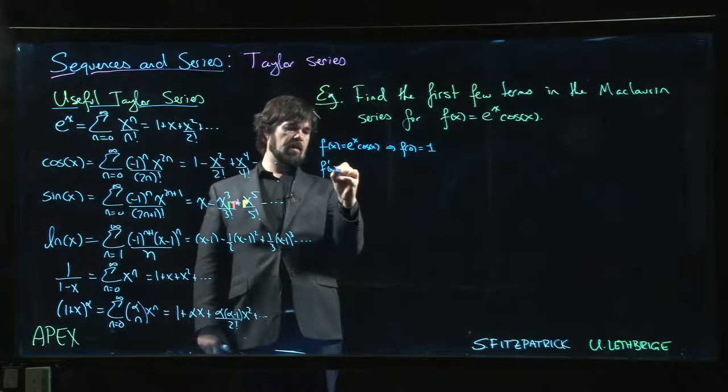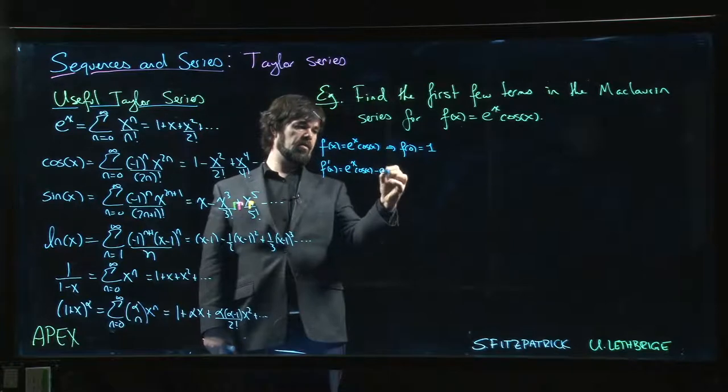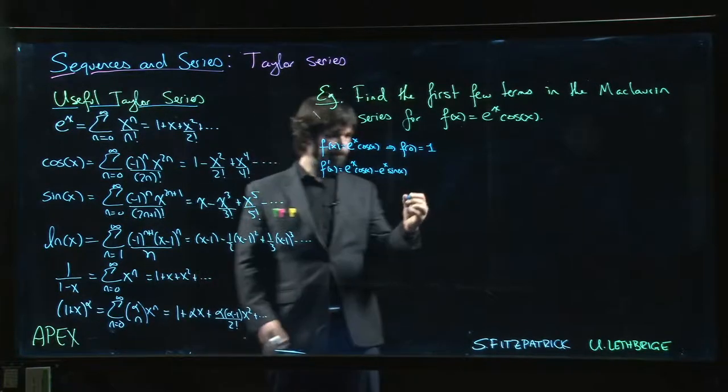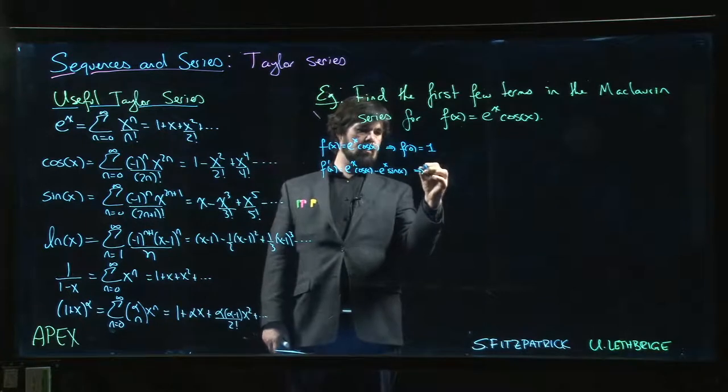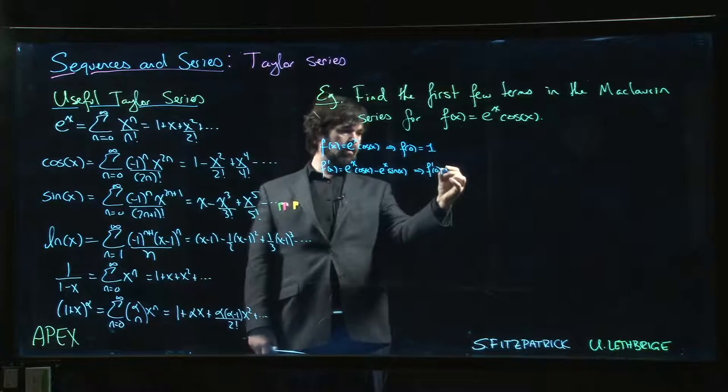f prime of x, oh, we've got to use product rule, right? e to the x cos x minus e to the x sin x, okay? So f prime of 0, oh, also 1, right, because that's going to go to 0.